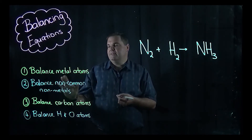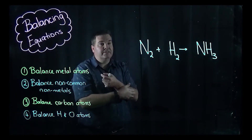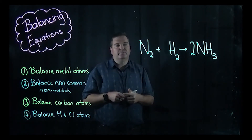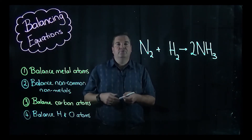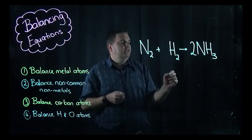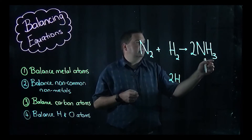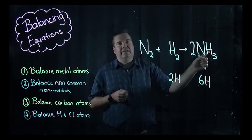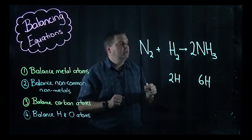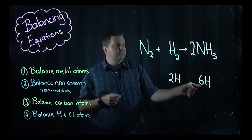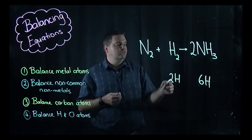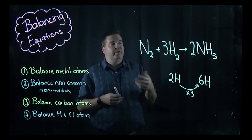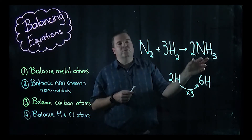Following our process — no metal atoms, so skip that step. Balance non-common non-metals: we've got two nitrogens on the left and only one nitrogen in NH3, so we put a 2 in front of NH3. No carbon atoms. Now balance hydrogen and oxygen: on the left we have two hydrogens (H2), on the right we have 2 × 3 = 6 hydrogens. To get from 2 to 6, we multiply by 3 — so put a 3 in front of H2. Balanced: N2 + 3H2 → 2NH3.